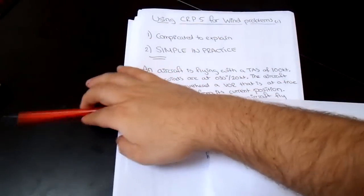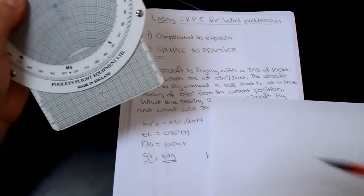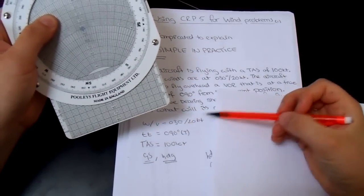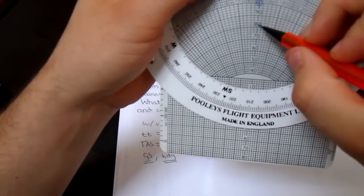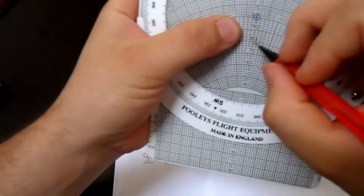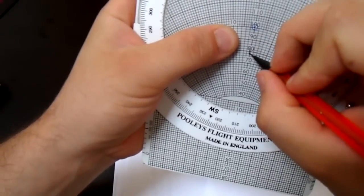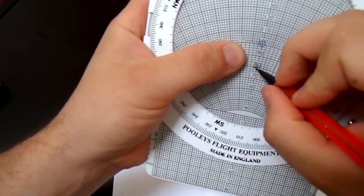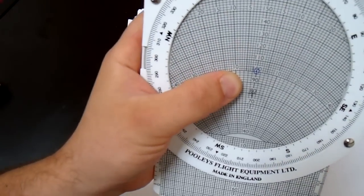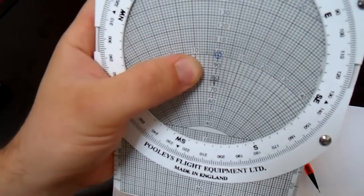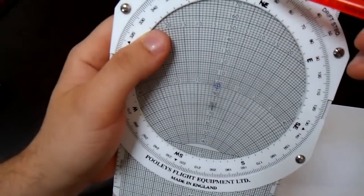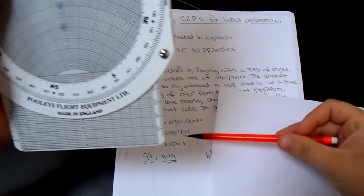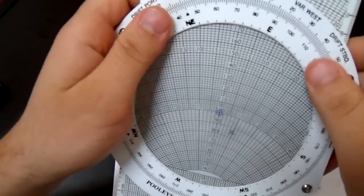So we're going to put a mark 20 knots below the 100 knots point. So 20 knots below this blue circle. There you go. We've got a cross at 80 knots. And now we're going to rotate so the true heading is lined up with 090. There you go.